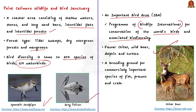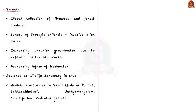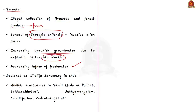Apart from birds and mammals, the sanctuary also serves as a breeding ground or nursery for many commercially important species of fish, as well as a breeding ground for prawns and crabs. Some 35,000 fishermen and agriculturalists support their families around the borders of this sanctuary. Point Kalamir is threatened by human activities like illegal collection of firewood, the spread of an invasive alien plant known as Prosopis chilensis, increasing brackish groundwater caused by expansion of salt works, and decreasing inflow of fresh water.